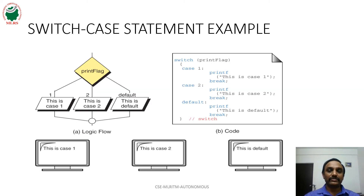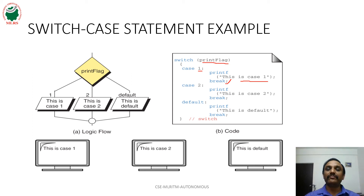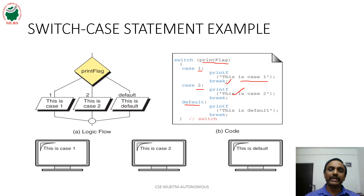Observe the example for switch case statement with break. In switch, a print flag value is given. If that value is 1, case 1 is satisfied, the corresponding statement is printed, break is encountered, and you come out of the switch block. If print flag value is 2, case 1 is not matched, then case 2 is matched, the corresponding printf statement is executed, break is encountered, and you come out of the switch block. If some different value other than 1 and 2 is given, automatically default is executed and you exit the switch block. That is the complete switch case statement using break.